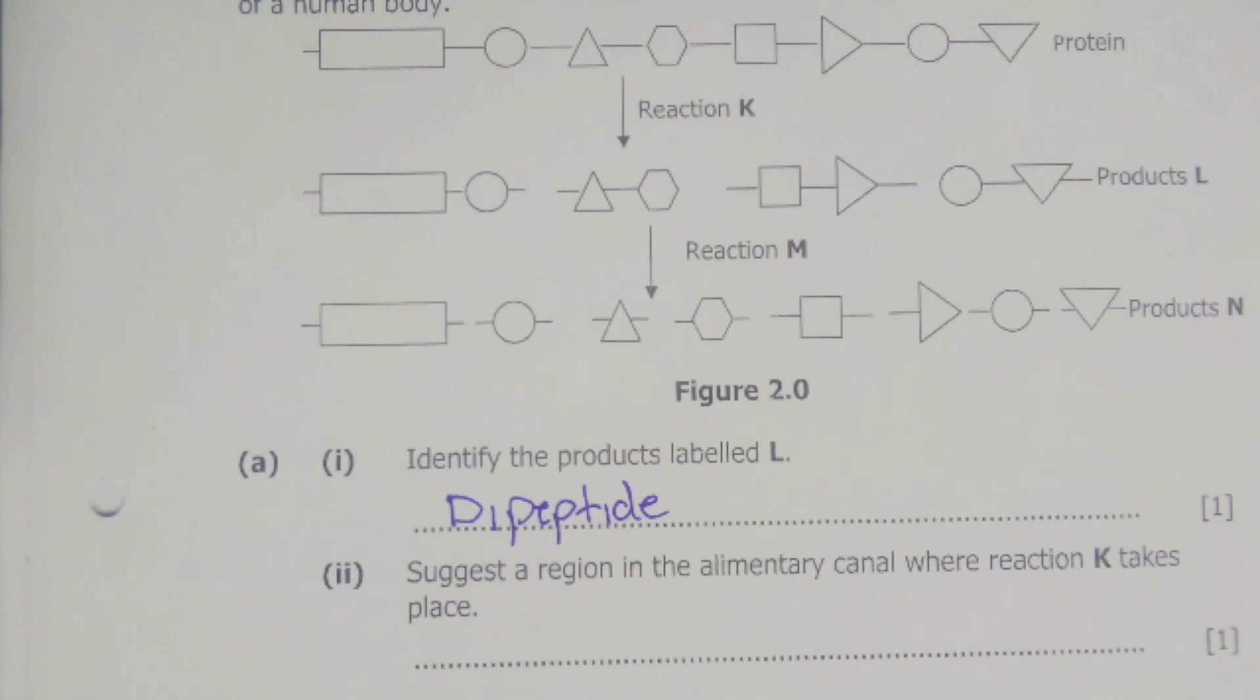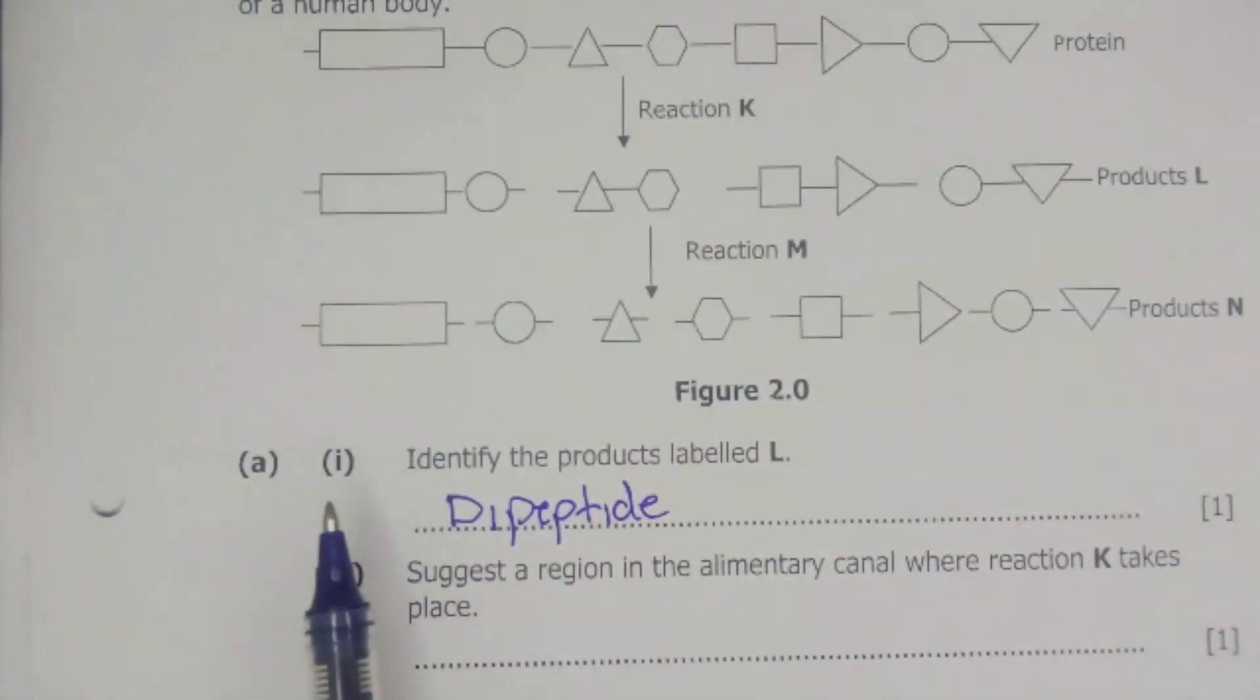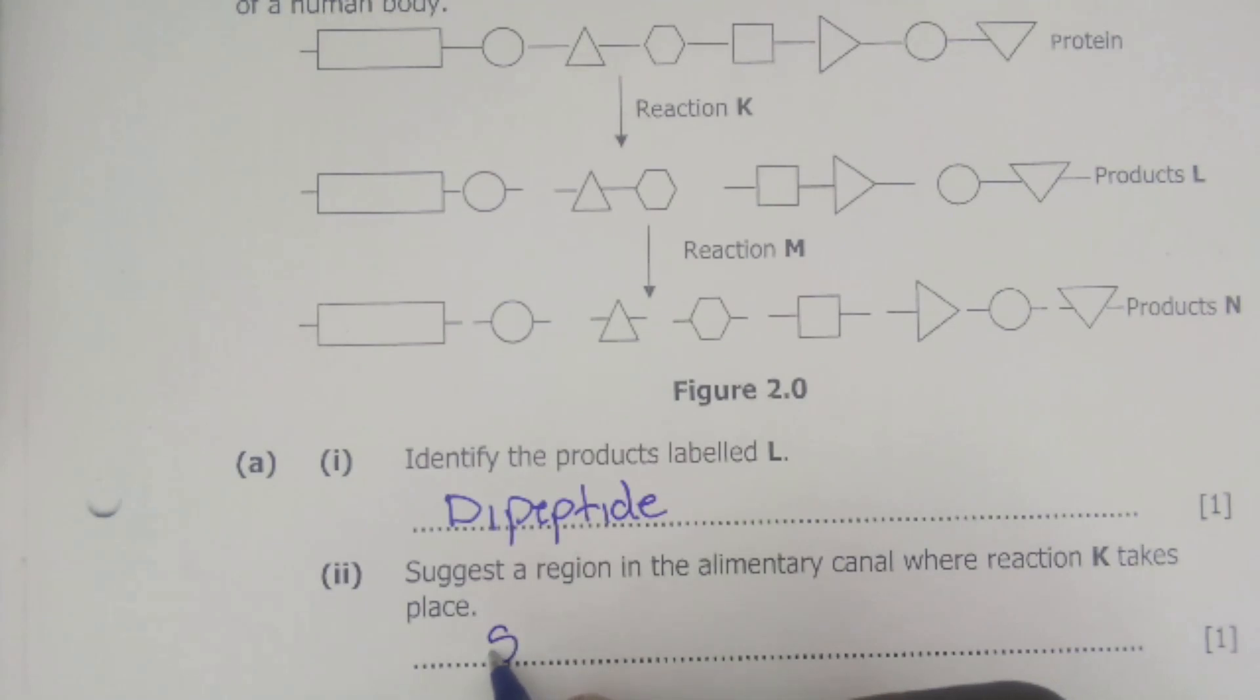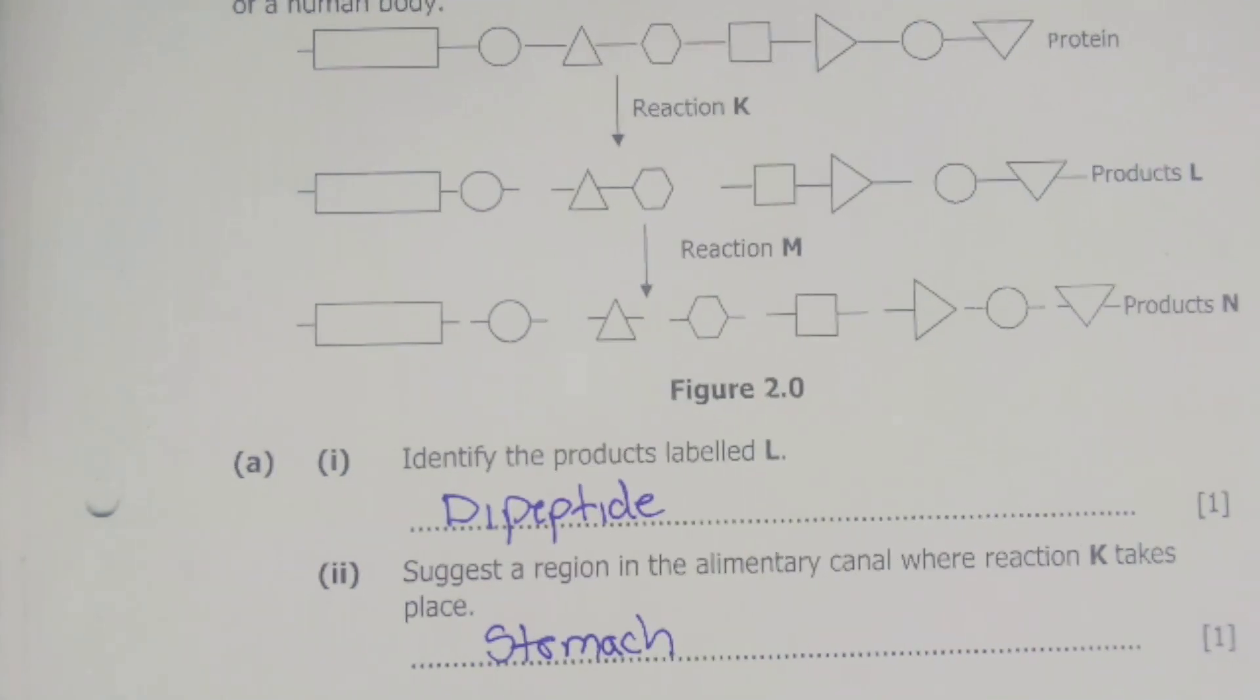For A2 the question says suggest the region in the alimentary canal where reaction K takes place. We are talking about reaction K where we break down the protein to form the dipeptide. This reaction will actually occur in the stomach. Here you could have put your answer stomach or the duodenum.